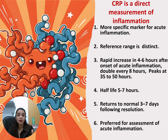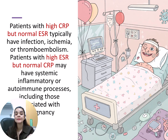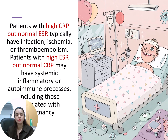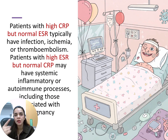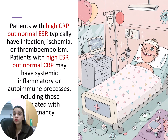We prefer CRP for acute conditions. When patients have high CRP but normal ESR, this typically indicates infection, ischemia, or thromboembolism. Many ischemic conditions — cardiac, brain, and others — can raise CRP. Elevated CRP is not limited to infection; infection is just one cause. So when we have elevated CRP, we should not just think about infection — maybe the patient's CRP is high due to inflammation from other reasons.